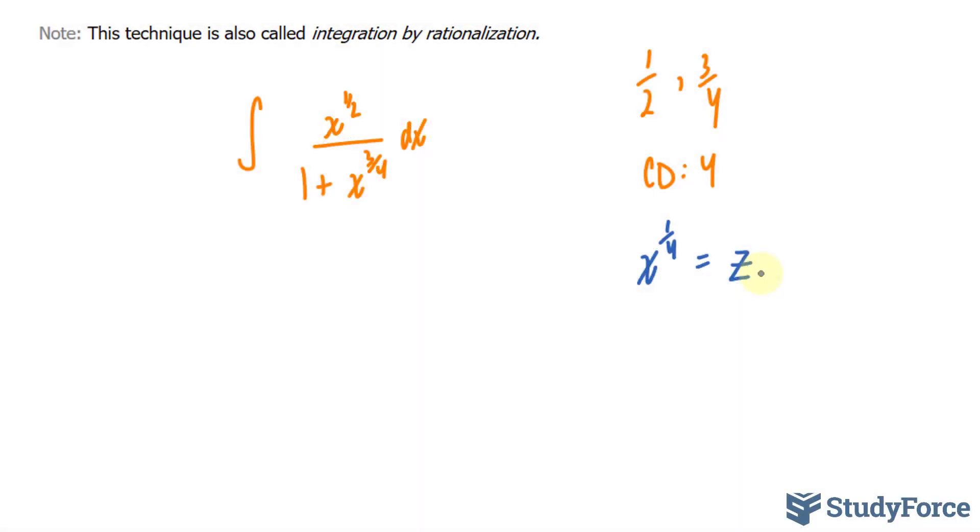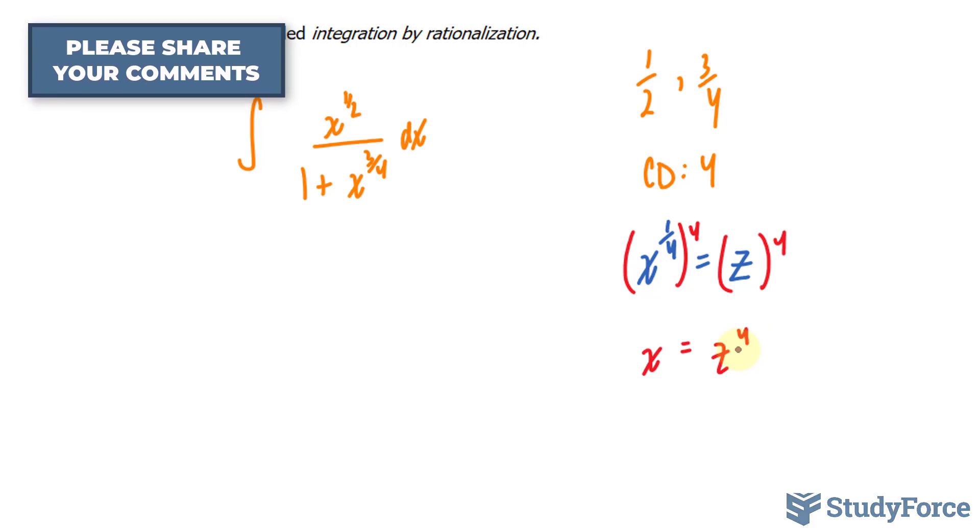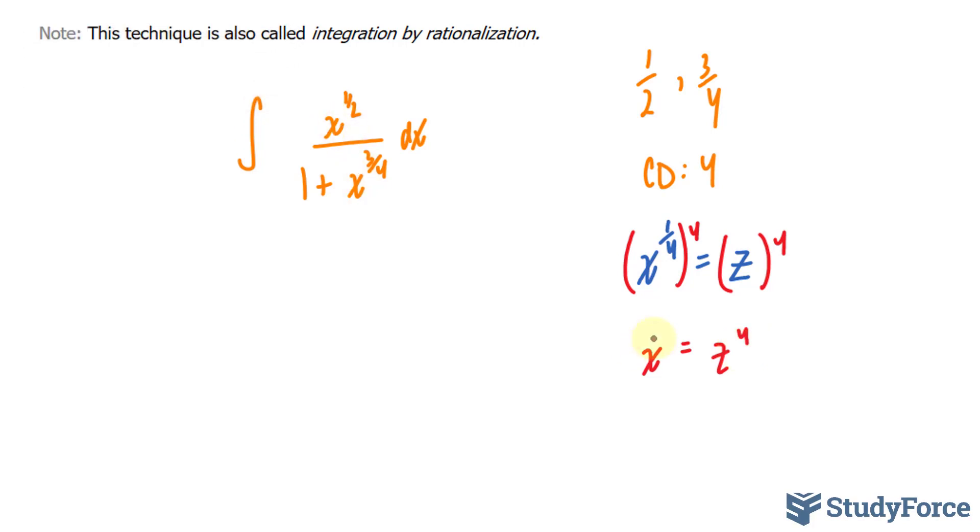My next step is to solve for x. And I can do that by powering both sides to 4. So if I power this side by 4 and this side by 4, I end up with x is equal to z to the power of 4.